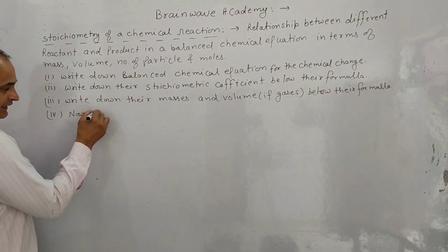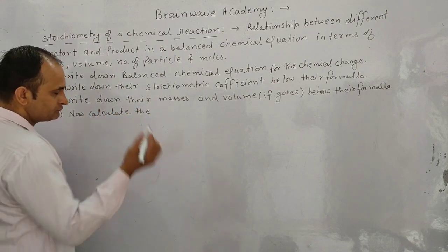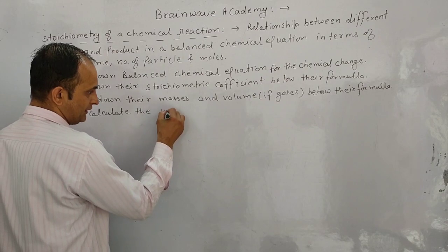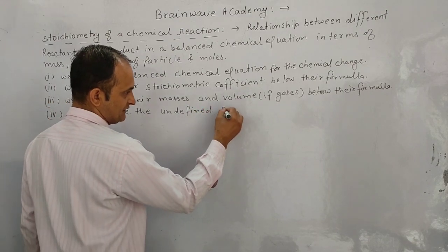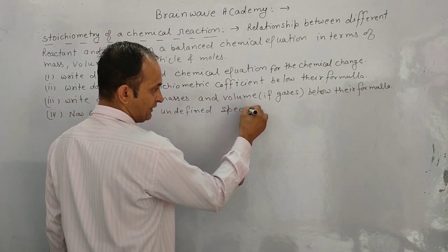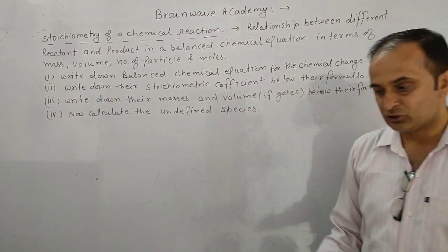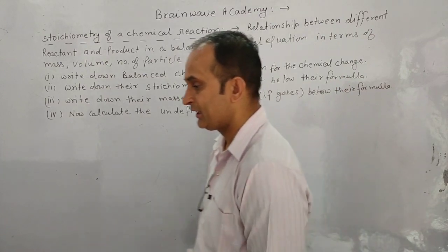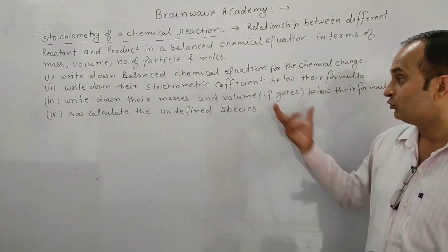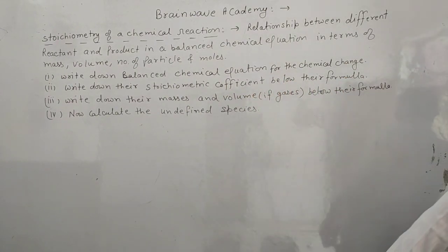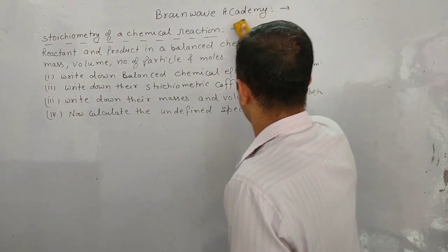Fourth step: calculate the undefined species — the species whose value we do not know, we will calculate it here. Now let us take two examples to understand how stoichiometric calculation is done.